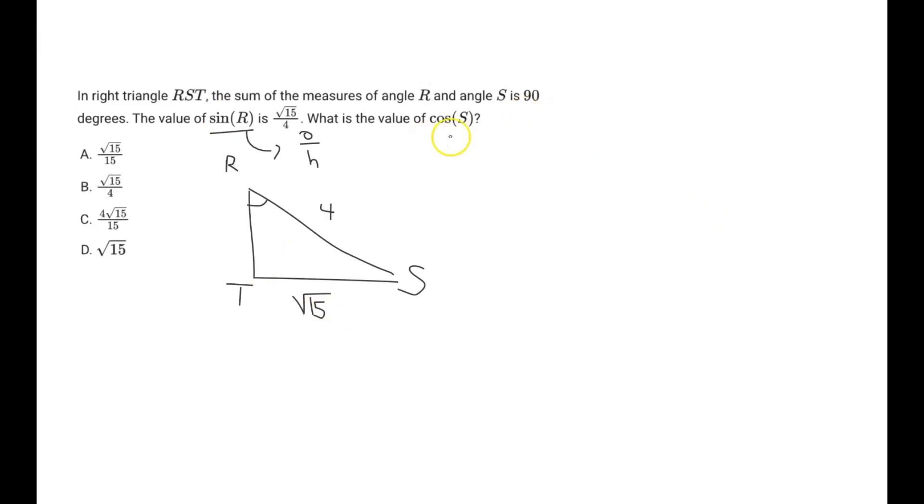So now it's asking, what is the value of cosine S? If we zoom in here on angle S, cosine is equivalent to adjacent over hypotenuse. So the adjacent value for angle S would just be square root 15.